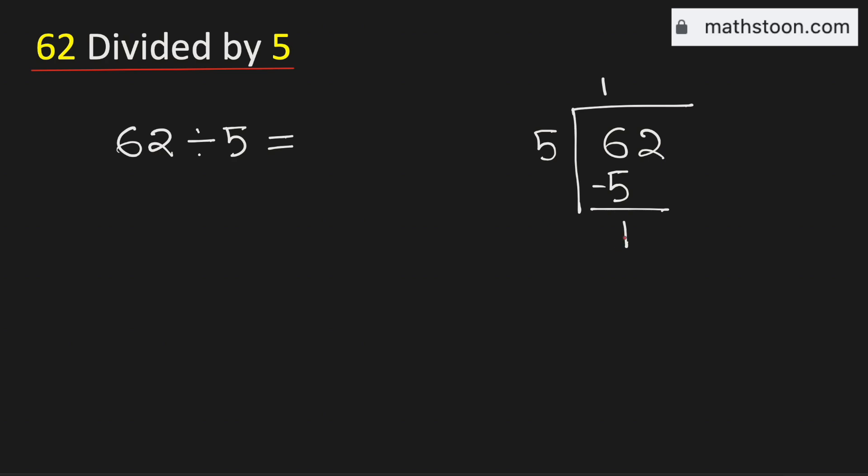As 5 cannot go into 1, we need to bring down this number 2 here. Now 5 times 2 is 10. Now subtract, we get 2.